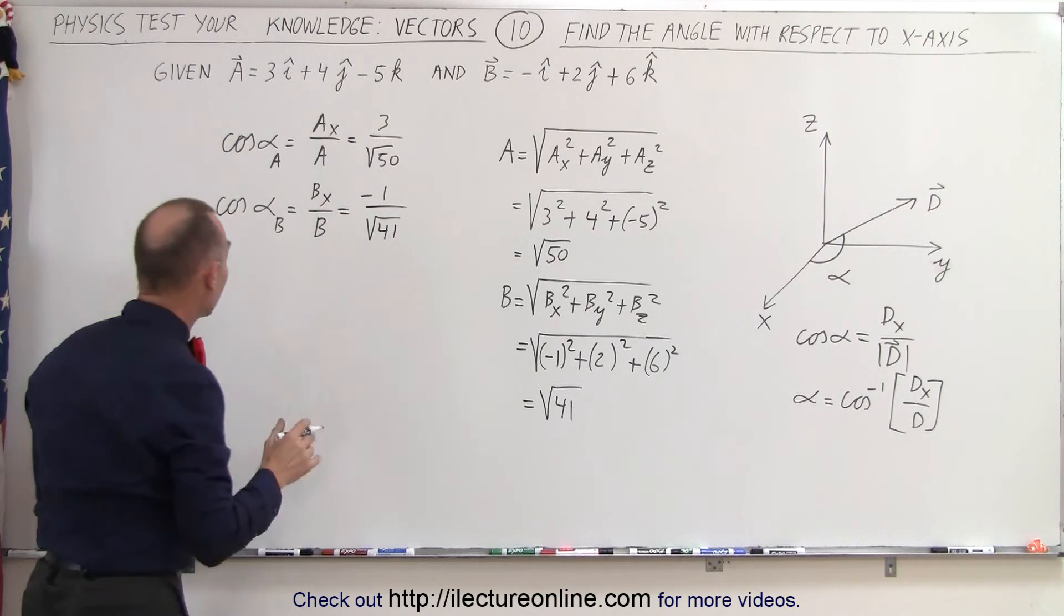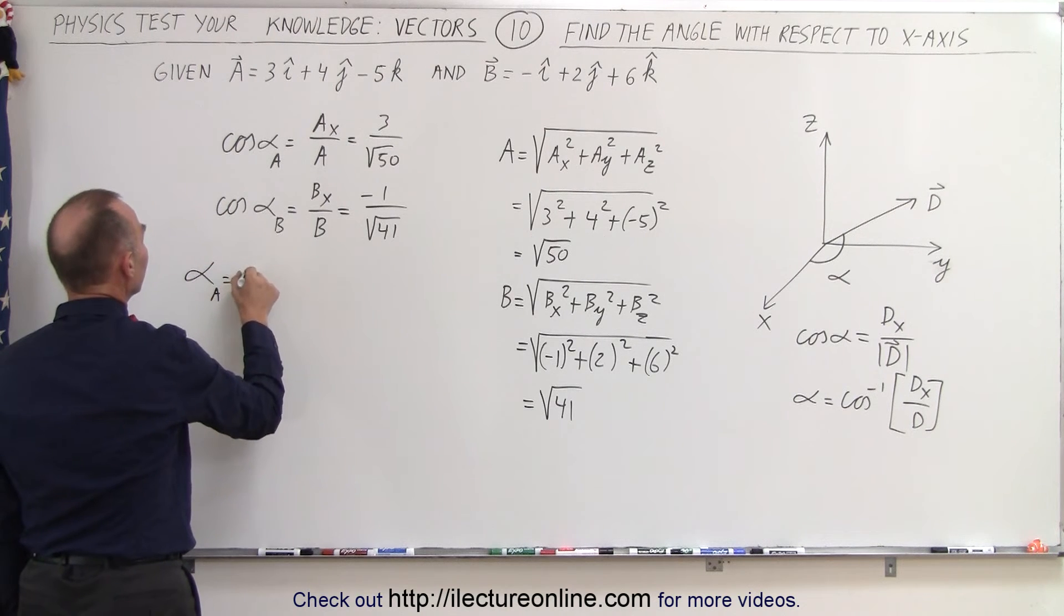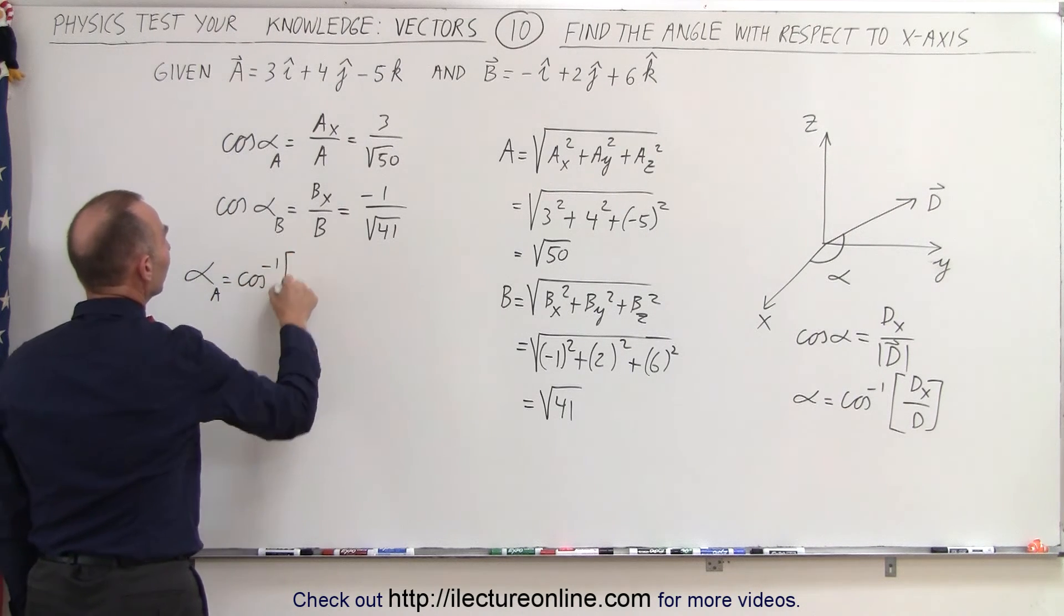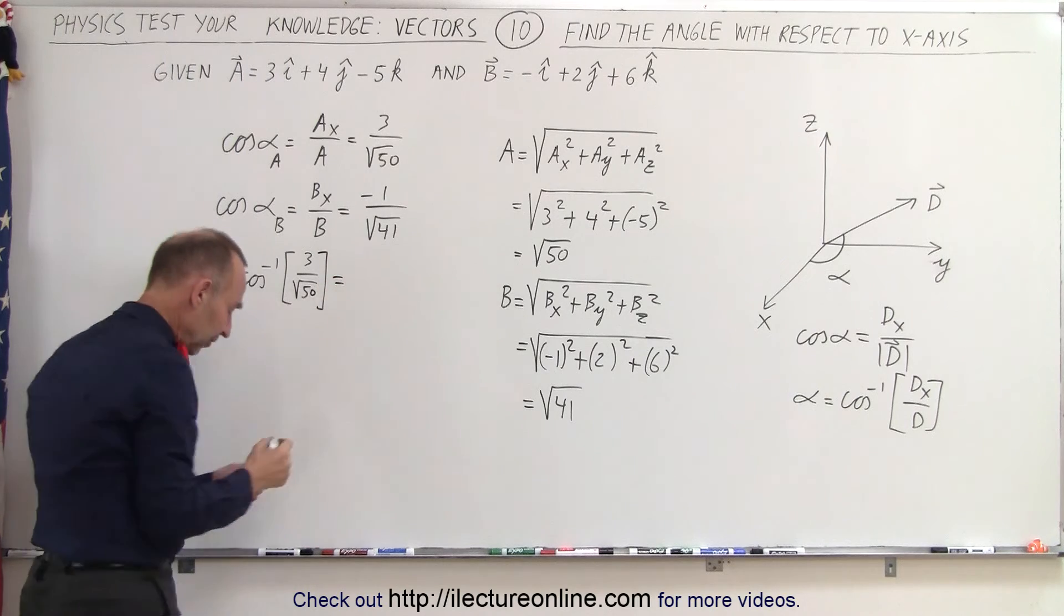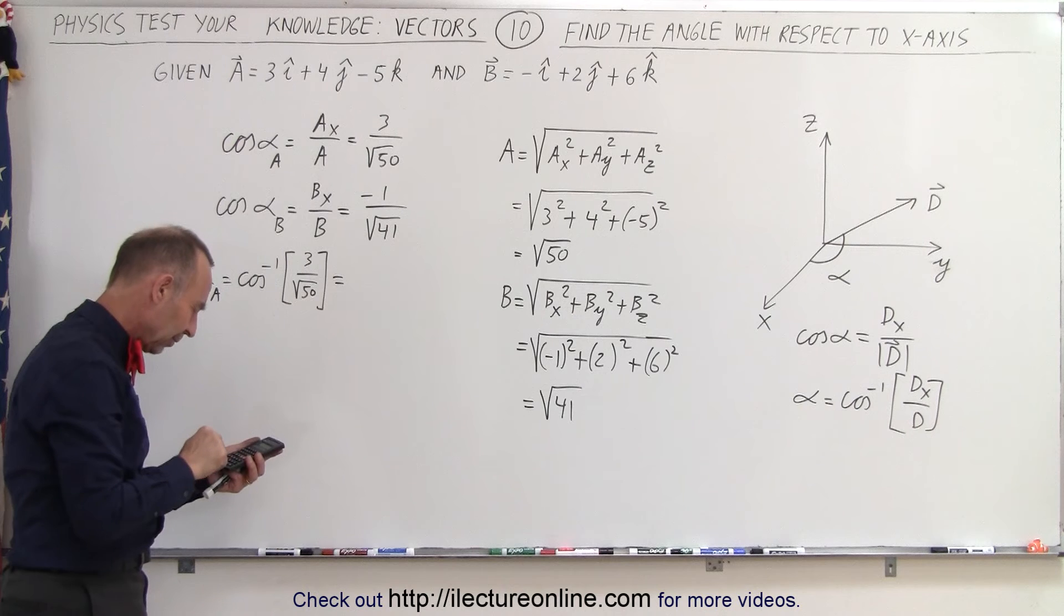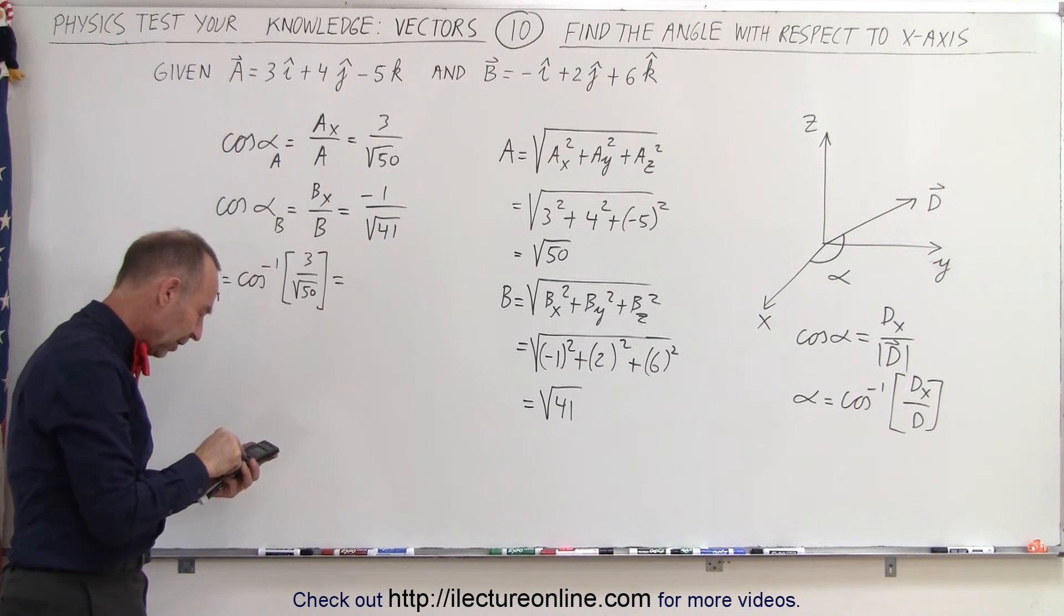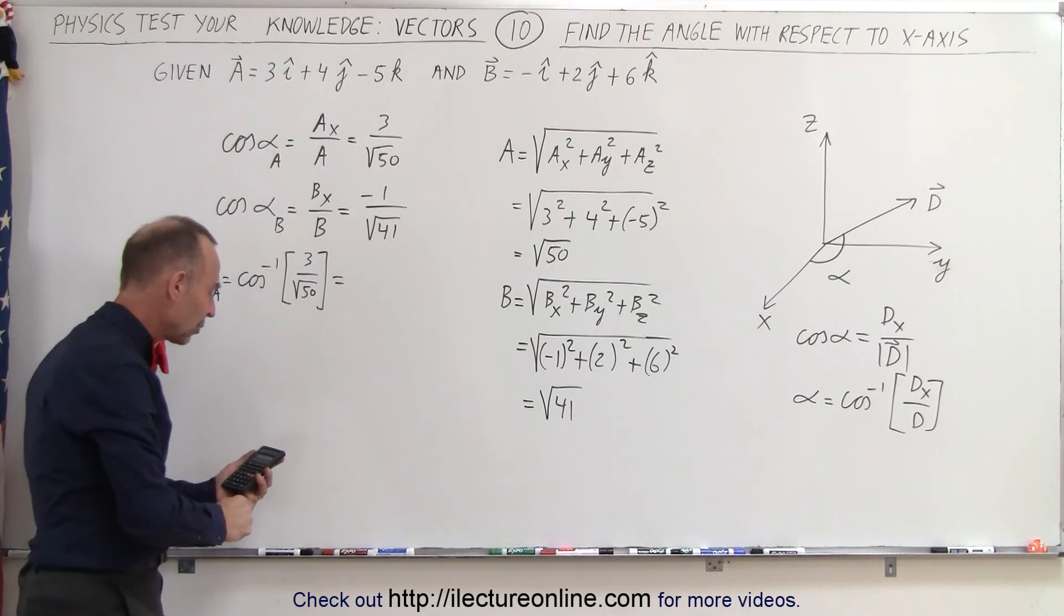And now we're ready to find the individual angles. So alpha sub a is equal to the inverse cosine of 3 divided by the square root of 50. Let's find out what that's equal to. So we have 3 divided by the square root of 50, take the inverse cosine of that and we get 64.9 degrees.